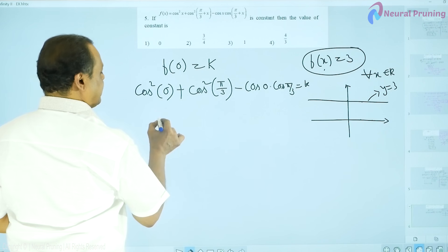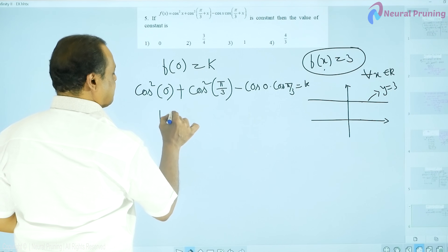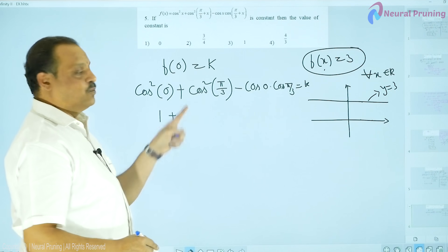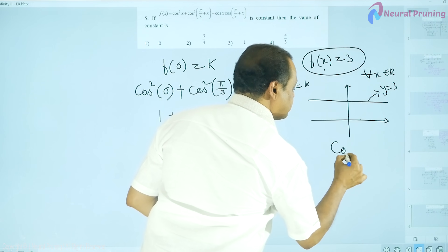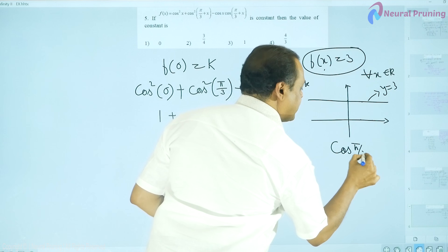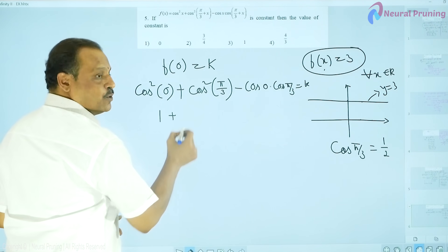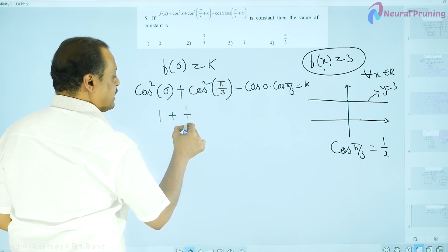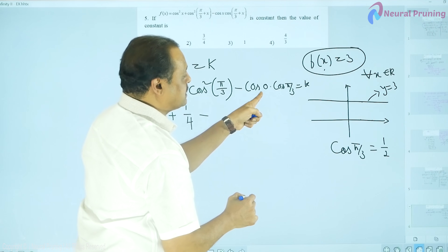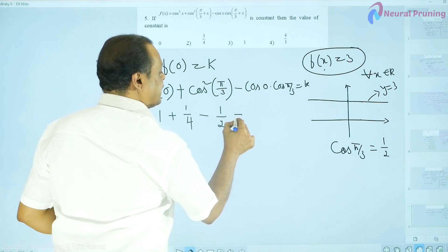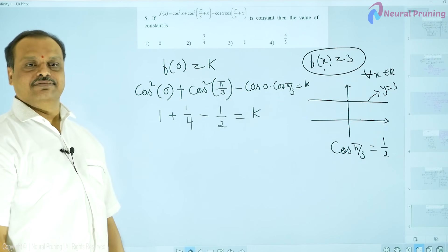So what is cos square 0? It is 1 plus cos square pi by 3. Cos pi by 3 happens to be 1 by 2. Therefore, 1 by 2 whole square which is 1 by 4 here, minus cos 0 is 1, cos pi by 3 is 1 by 2. And that is the value of k, what we are in need of.